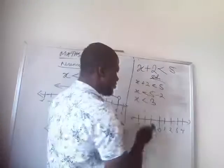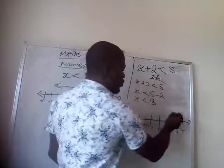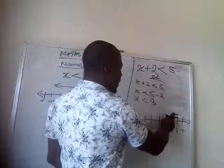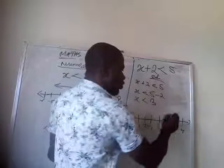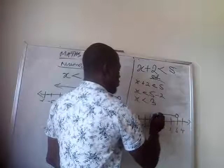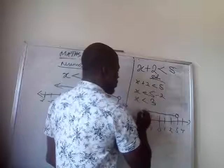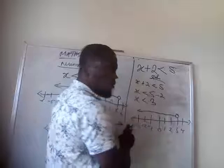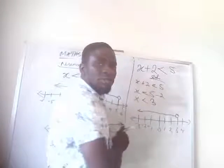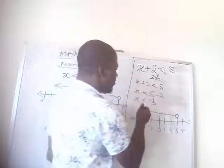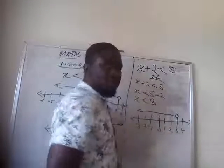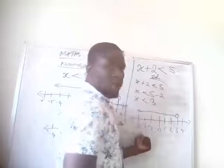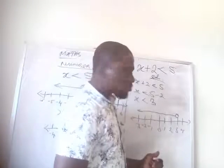So from here now, it said X is less than 3. So from 3 now, remember it's not equal to. Since it's less than 3 and it's not equal to, you draw your line. You move as much as you can. Remember this arrow, because the numbers in negative did not stop at minus 3. This arrow indicates that it also involves other numbers apart from minus 3.